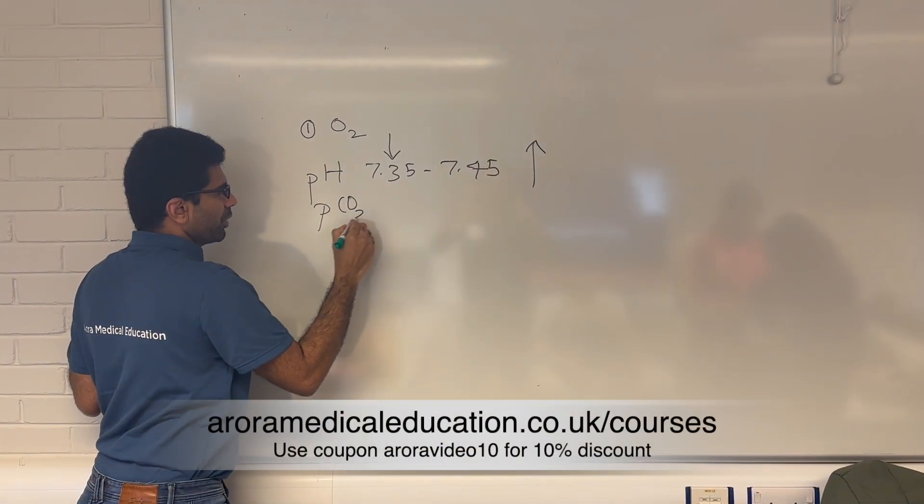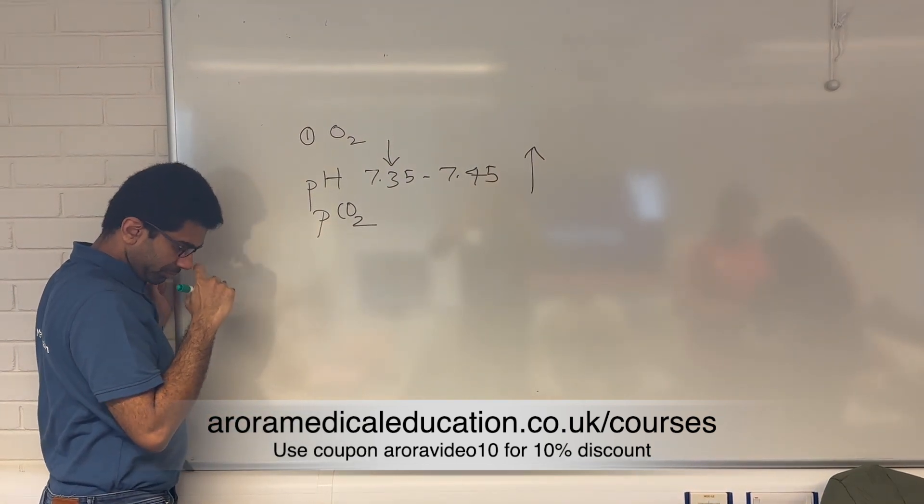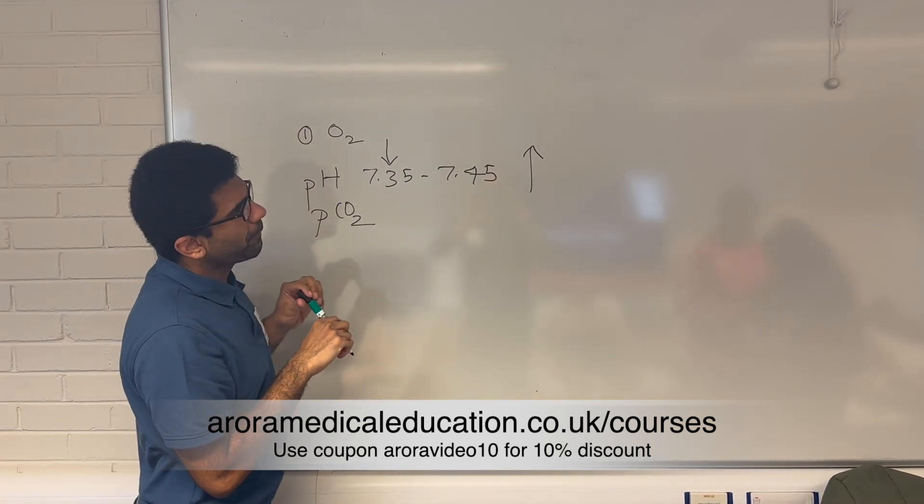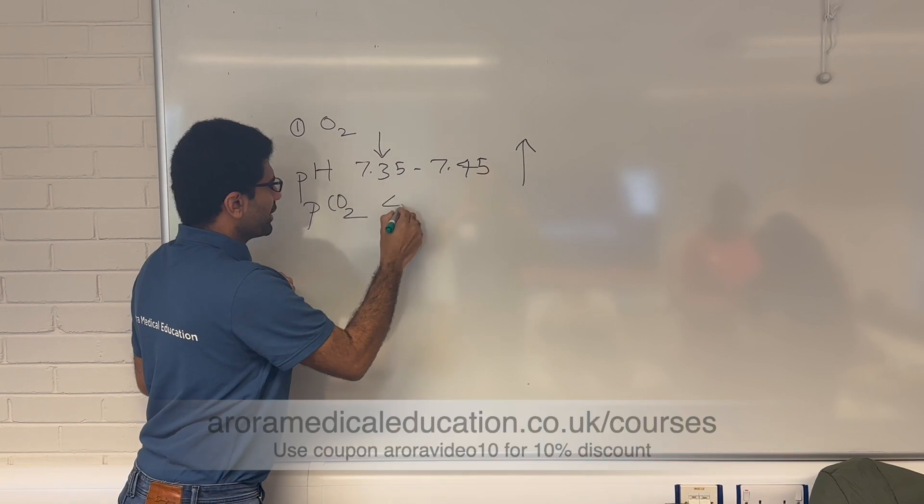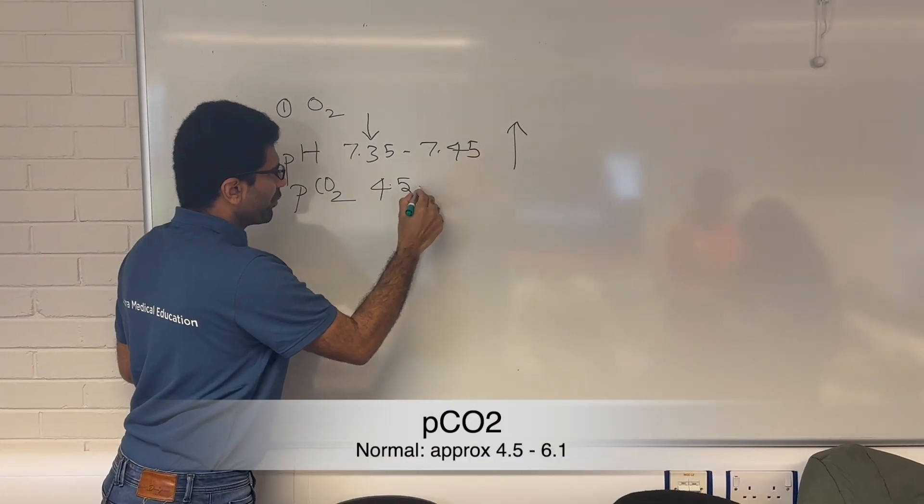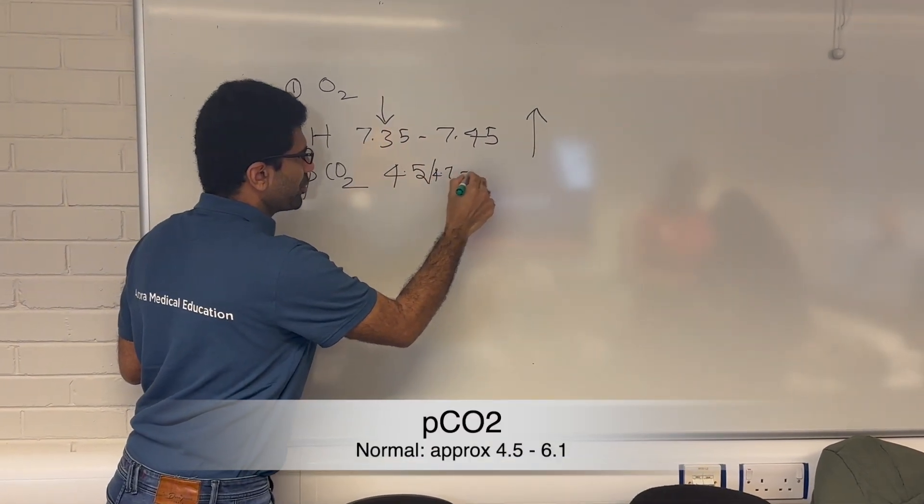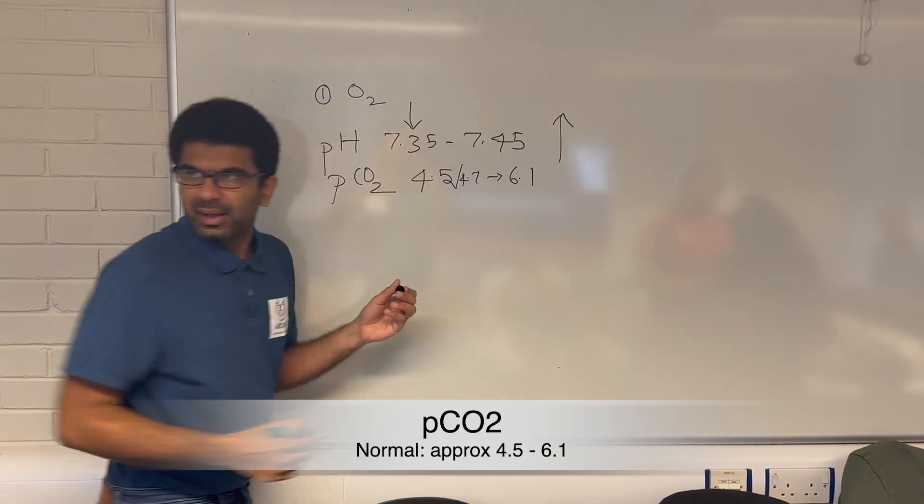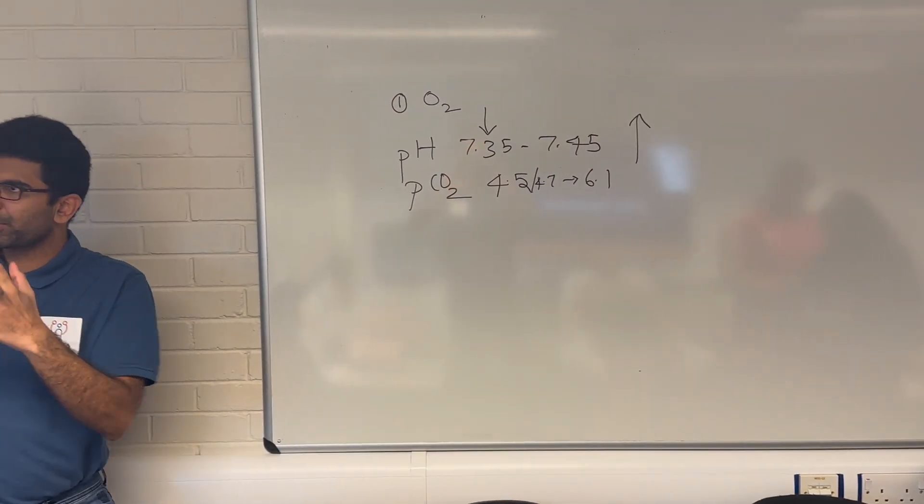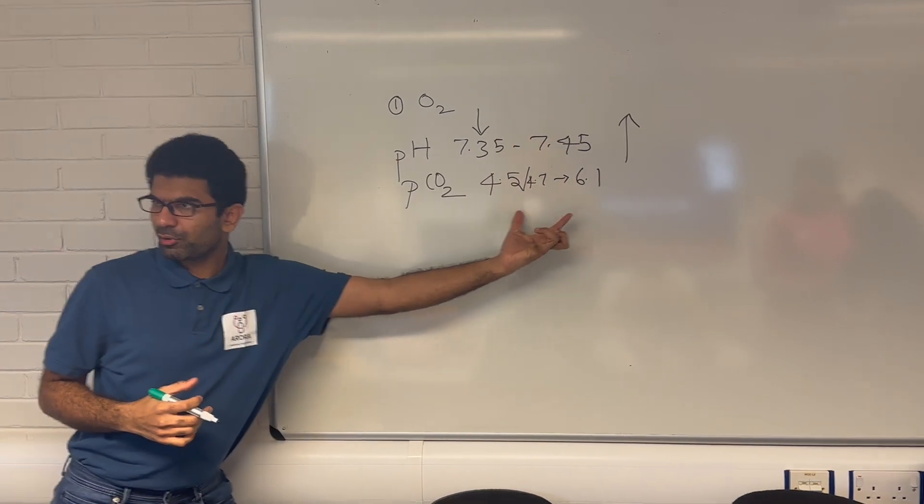Next, you come for PCO2. What's the value? 4.7. So it's approximately 4.5 or 4.7, sometimes some machines might say up to 6.1. Again, your machine will say some of it depends on the calibration, but this is a normal range. 4.5 to 6.